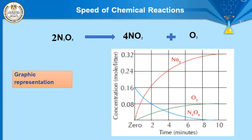The graphical representation of the speed of the chemical reaction shows: N₂O₅ (blue) starts at maximum concentration and decreases to zero; products start at zero and increase. Nitrogen dioxide's curved line is higher than oxygen's because nitrogen dioxide has four molecules while oxygen has only one molecule formed per reaction.